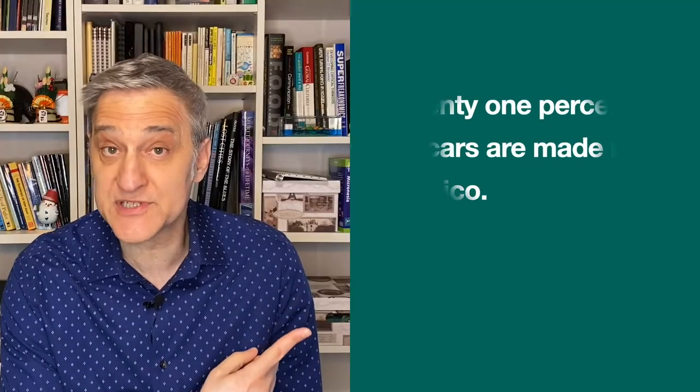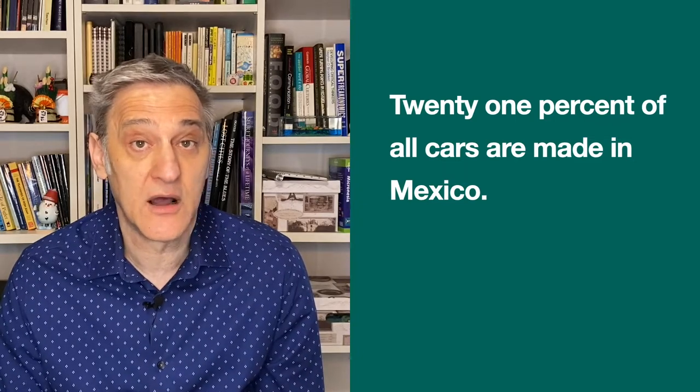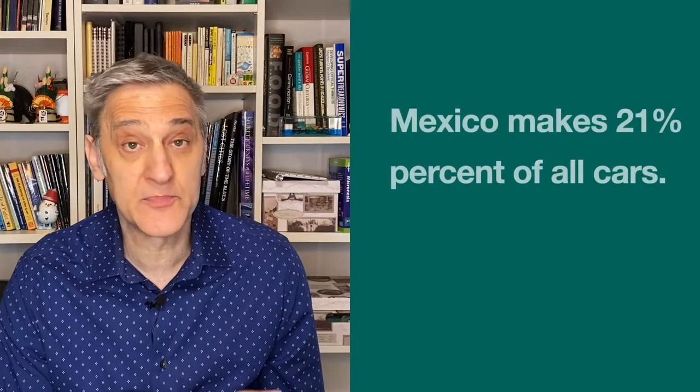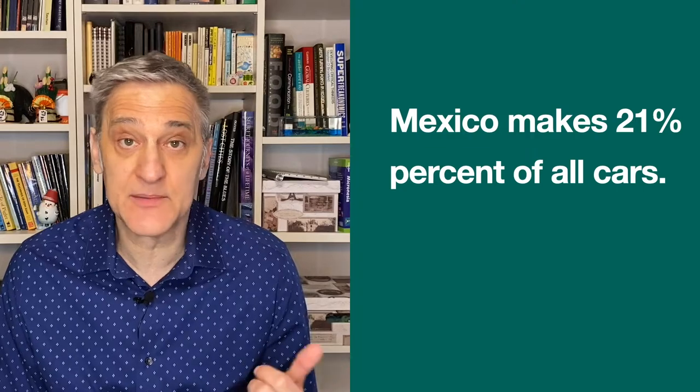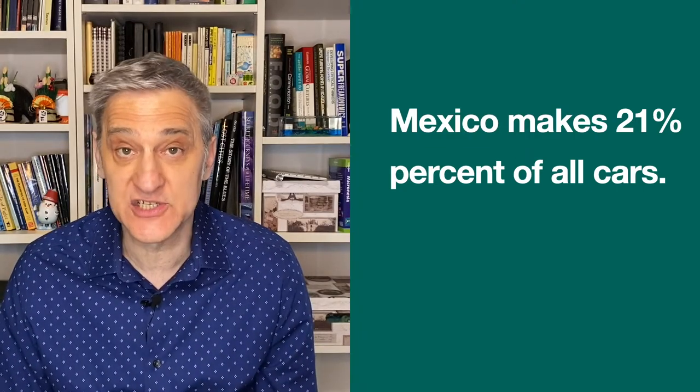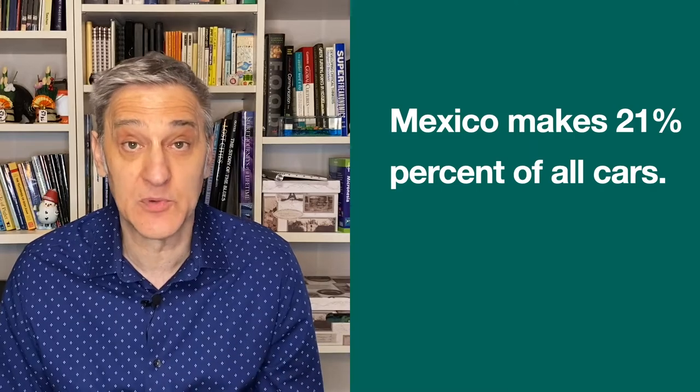If you know the exact number of cars that are made in Mexico, you could change the sentence and say something like this: 21% of all cars are made in Mexico. Remember, you could always write the sentence this way — Mexico makes 21% of all cars. In this case, the percent is in the middle of the sentence, so we would write the digits 2, 1, and then the percent symbol.